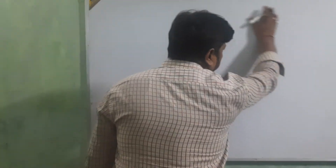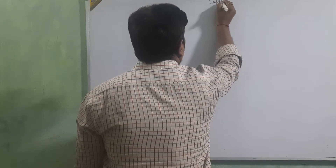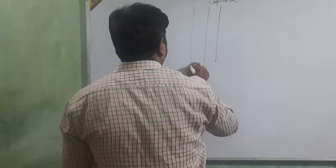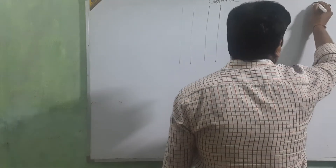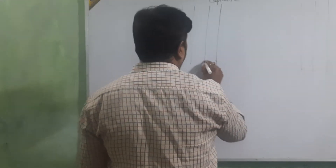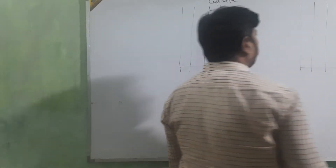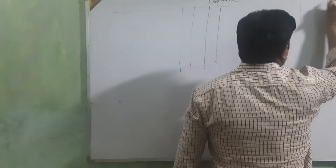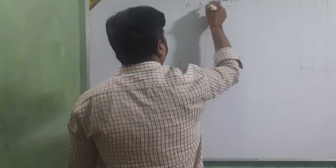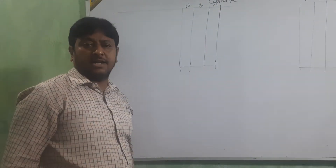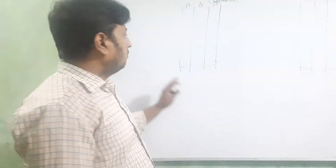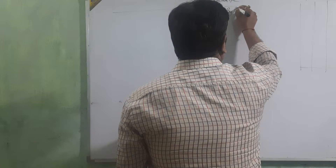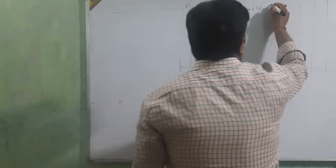First we are going to see how we are going to make the capital account. If the capital is fluctuating, then we are going to make only one account — that is the capital account. In this capital account, the number of amount columns depends on how many partners there are. One partner: one column, two partners: two columns, three partners: three columns. This is the form of the capital account when capital is fluctuating.